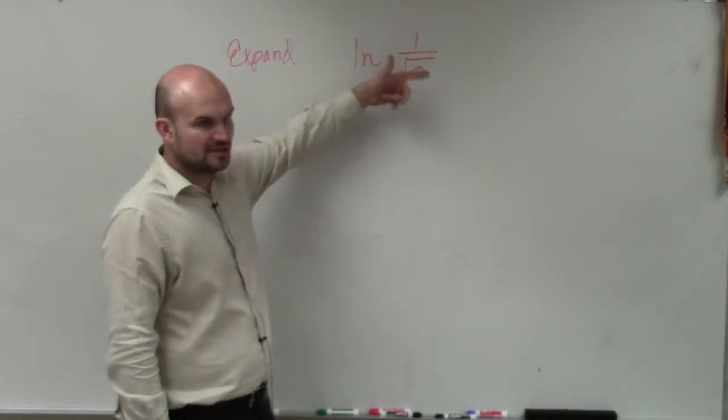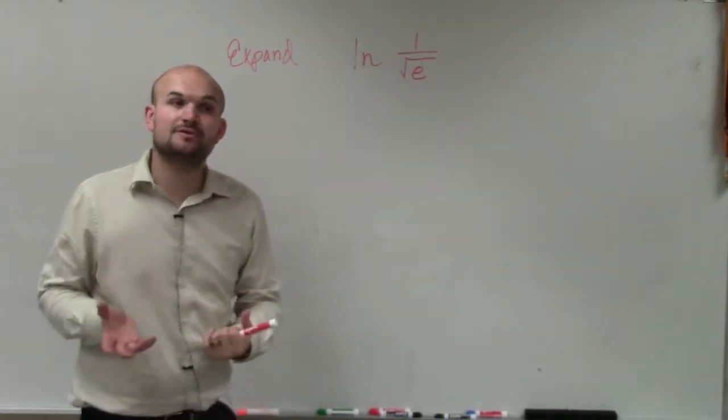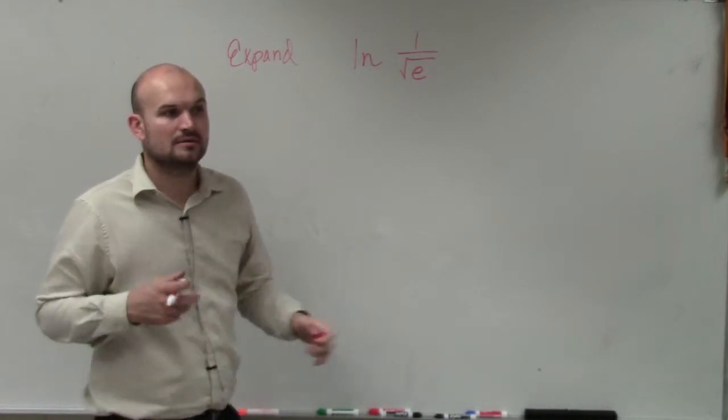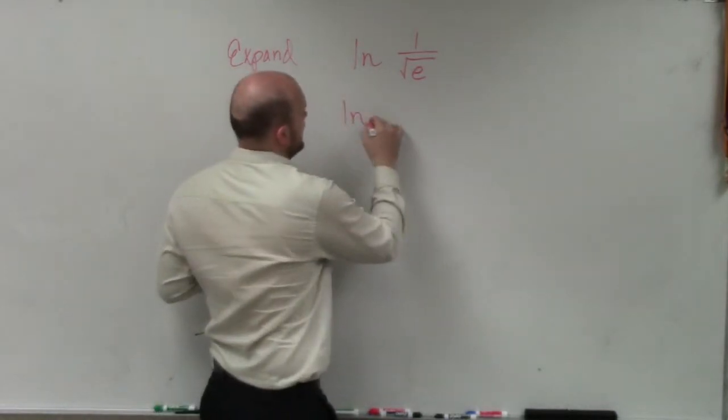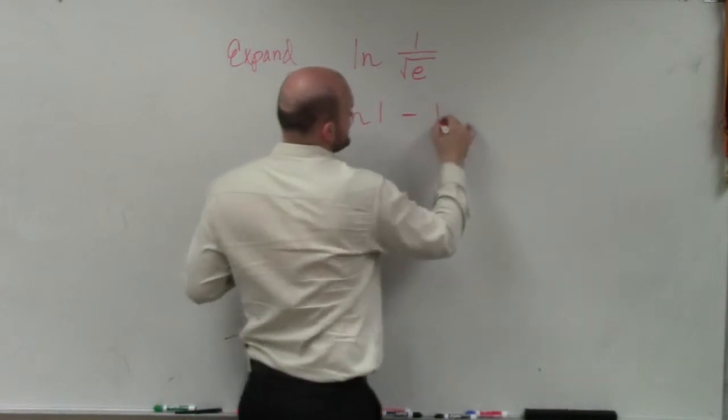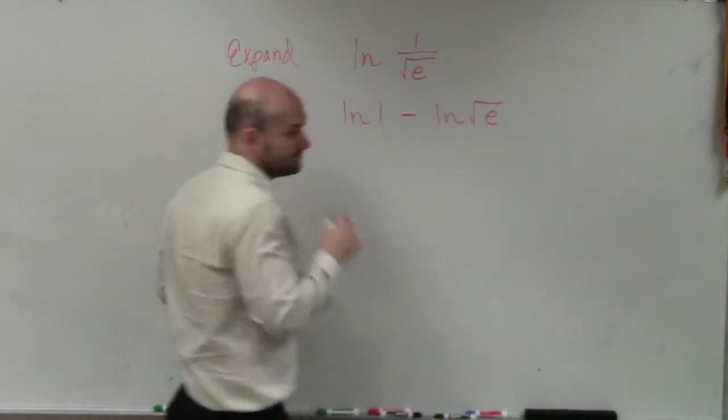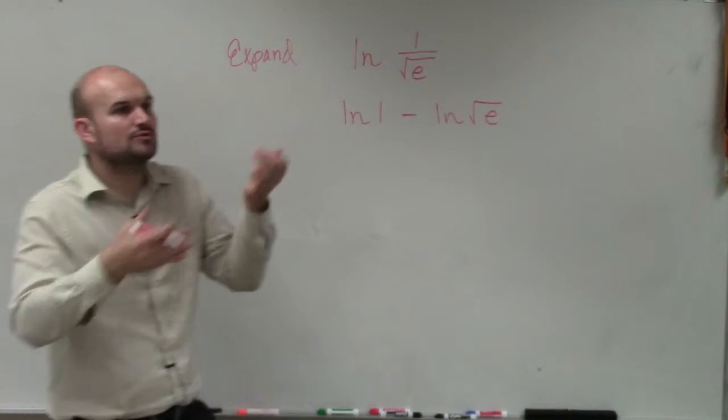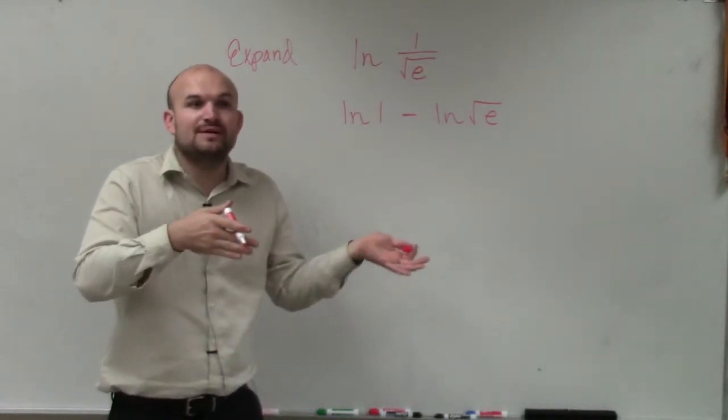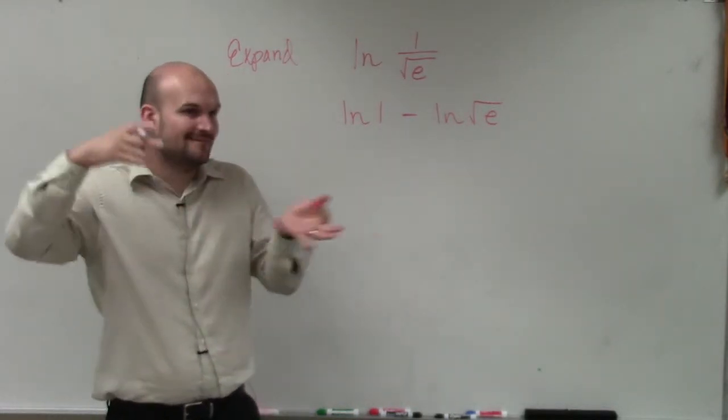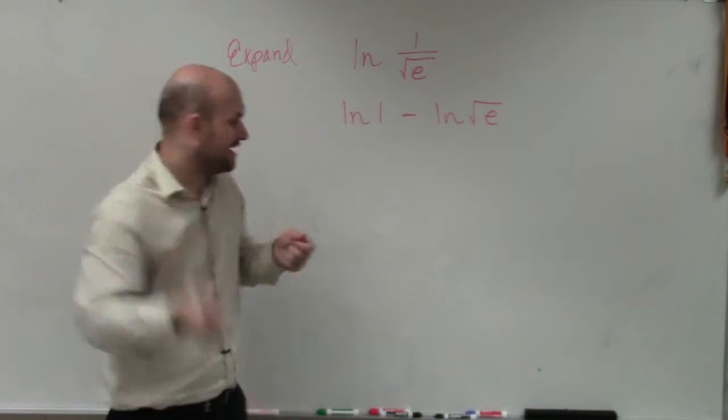We see there is a division, right? So therefore, we're going to break up the two logarithms by subtraction. So I'm going to write ln of 1 minus ln of the square root of e. Now, the square root of e can also be rewritten as e raised to the 1 half power.